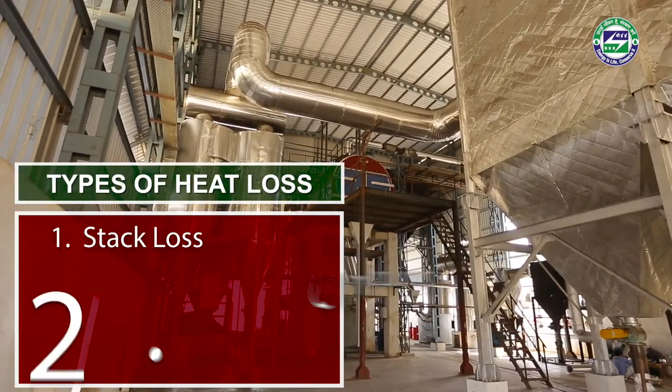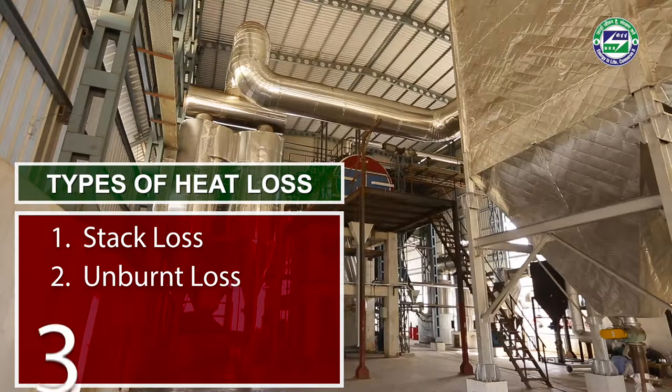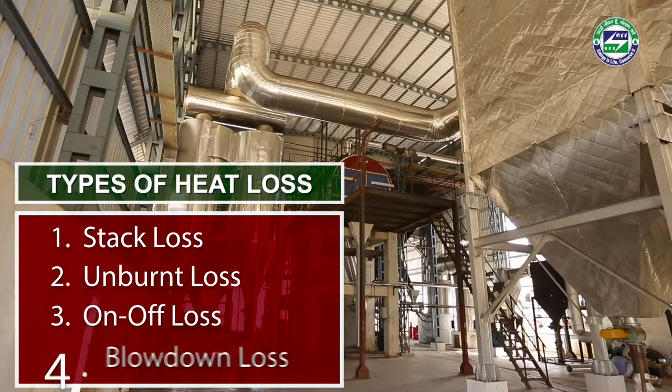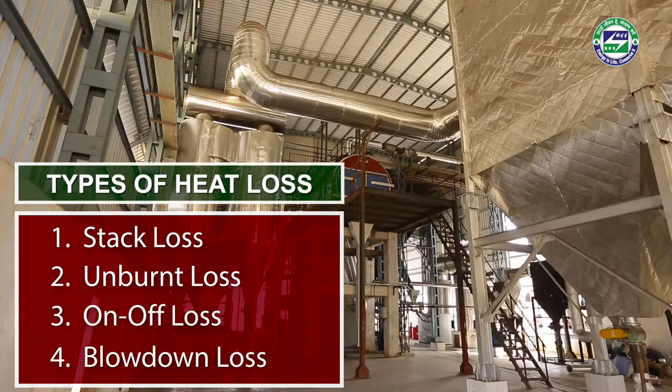There are four major types of heat losses occurring in a conventional boiler: stack loss, unburnt loss, on-off loss, and blow down loss.